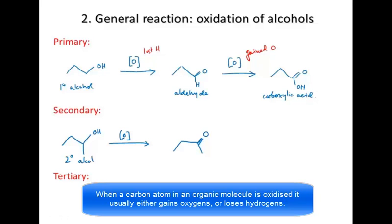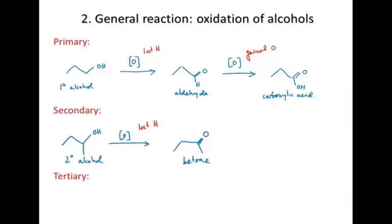For the secondary alcohol turning to the ketone, you can see again we haven't increased the number of oxygens, but we have reduced the number of hydrogens. We've lost hydrogen. So primary alcohols form aldehydes and then carboxylic acids. Secondary alcohols, because the OH group is on a middle carbon, form ketones.